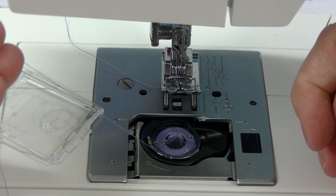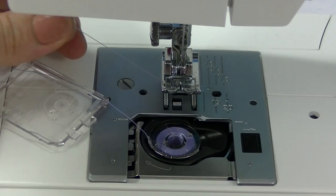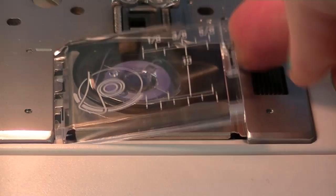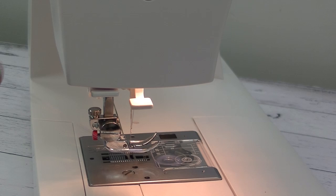Once you've done that, we need to bring the bobbin thread to the top. I hold on to my top thread, wind the flywheel towards me until it will pick up the bobbin thread and lift it to the top of the foot. Replace your bobbin cover and take your threads up to the side of the machine and pulling from the back through to the front, trim them off.